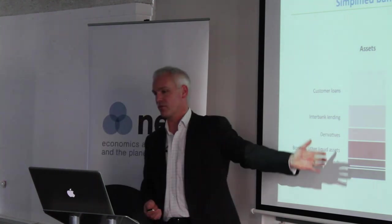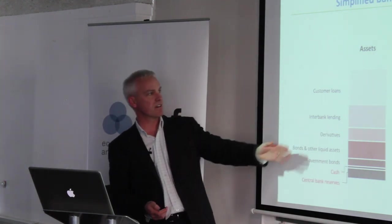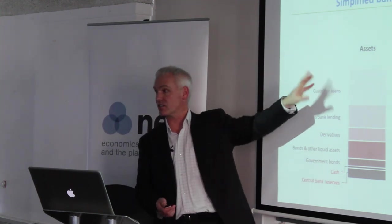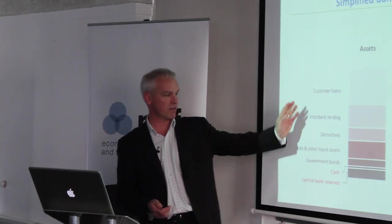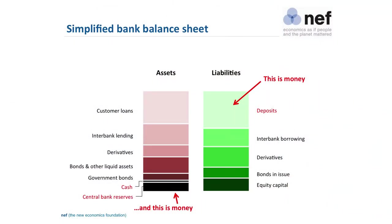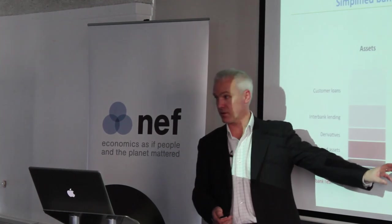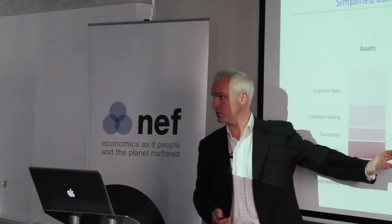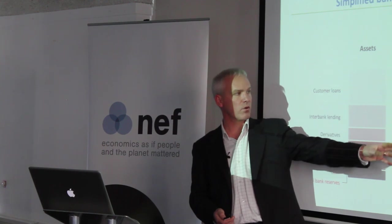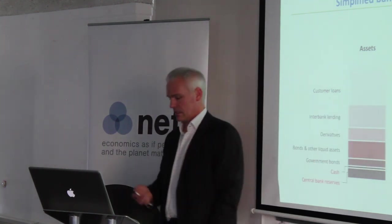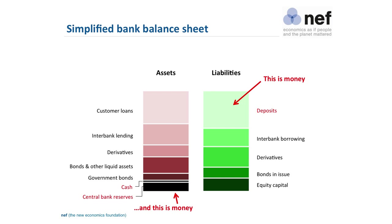Starting with a simplified bank balance sheet: on the asset side are customer loans. There are other key assets that banks have, not least central bank reserves and cash. On the liability side, they have their own capital, bondholders they owe money to, interbank borrowing, and deposits. Customer deposits are a liability of the bank — that is money. Under any recognisable, ordinary sense of the term, that's what people in the street think is money: bank deposits.